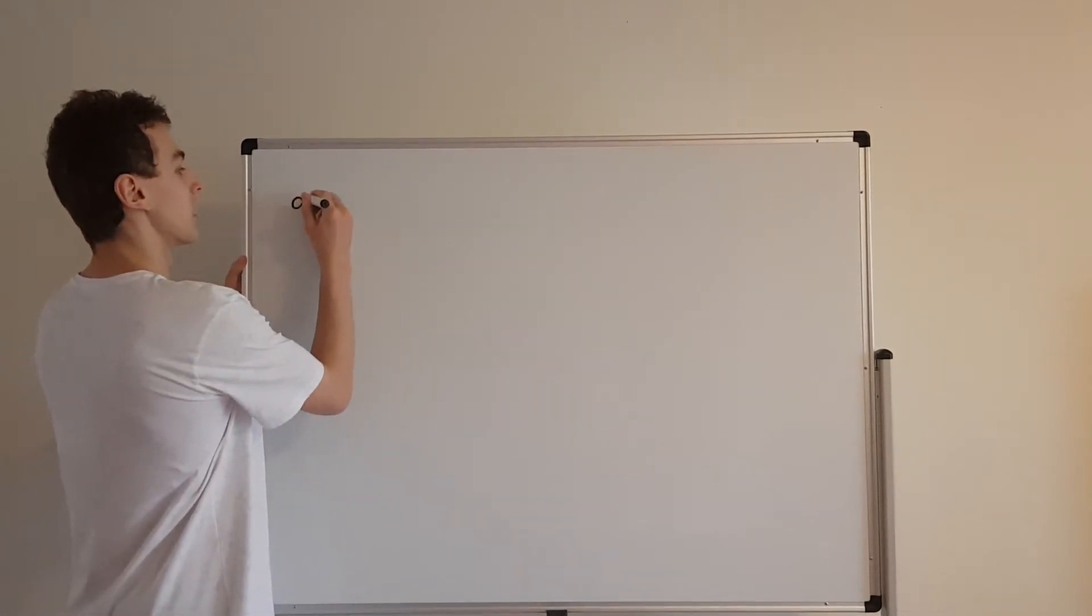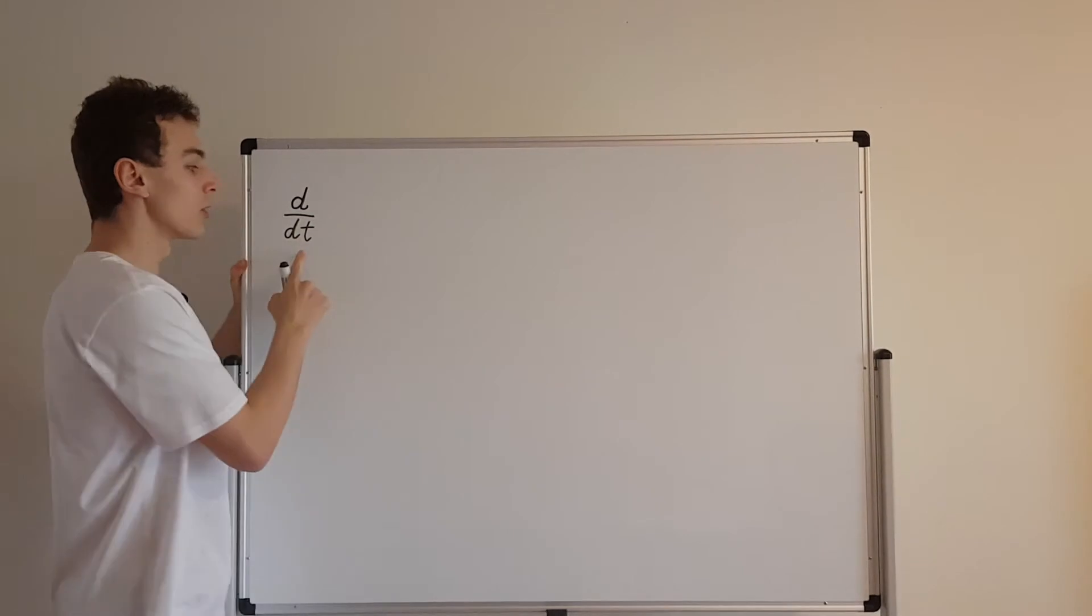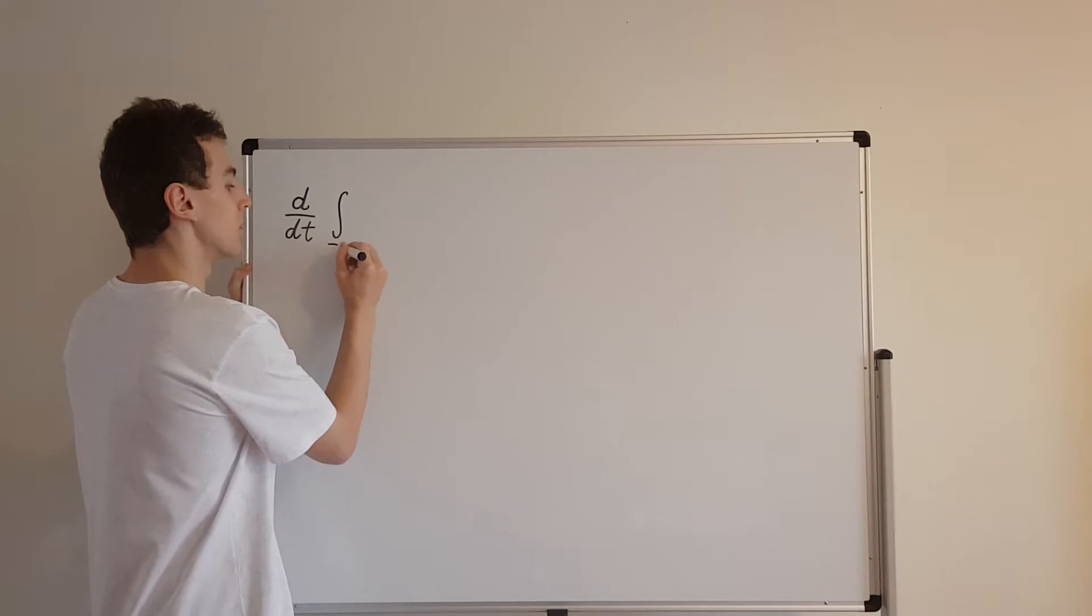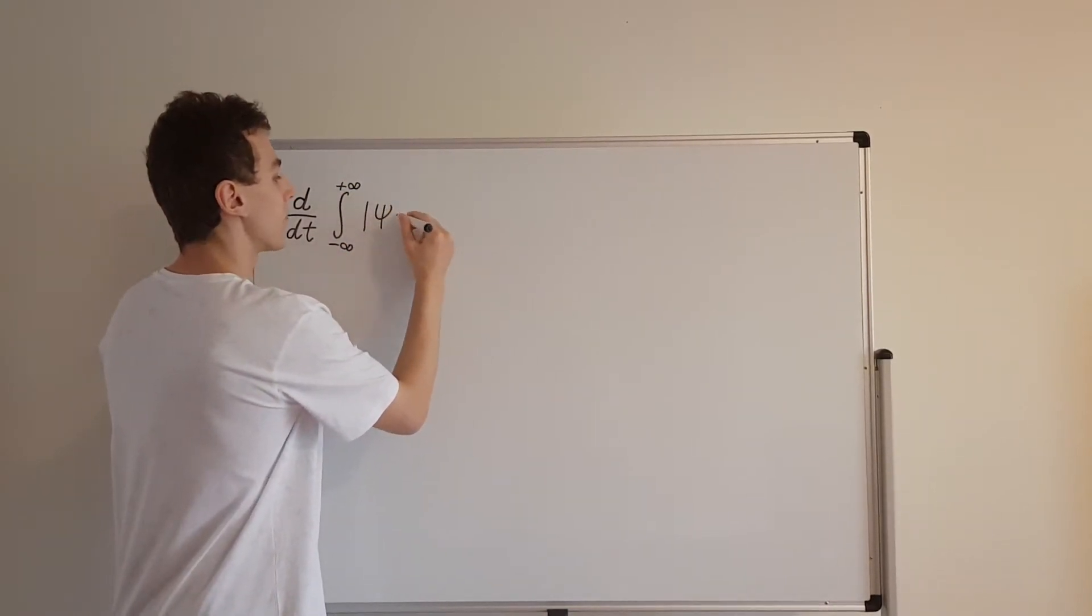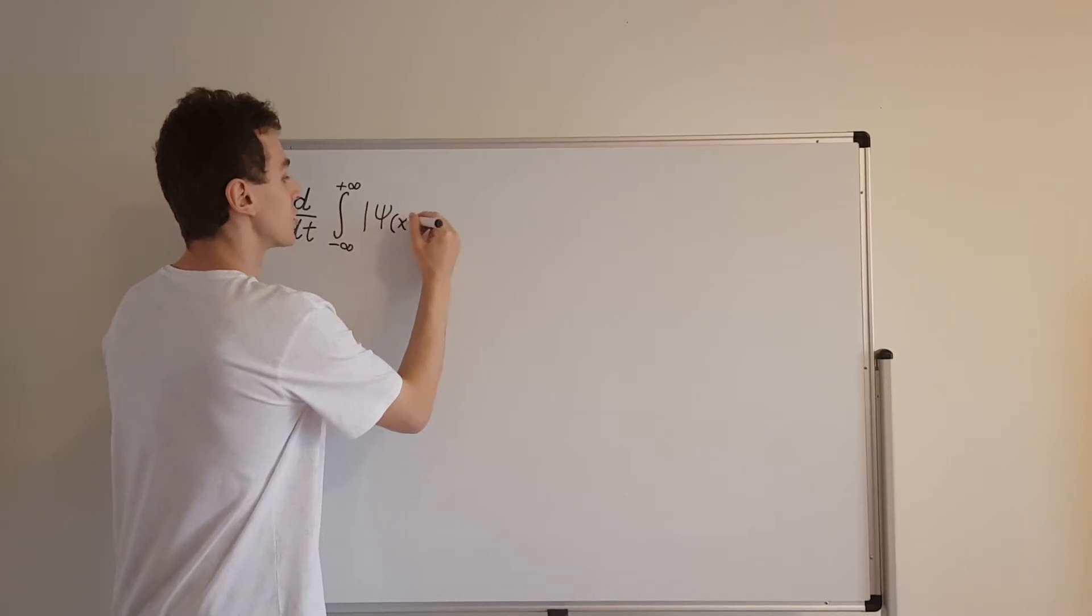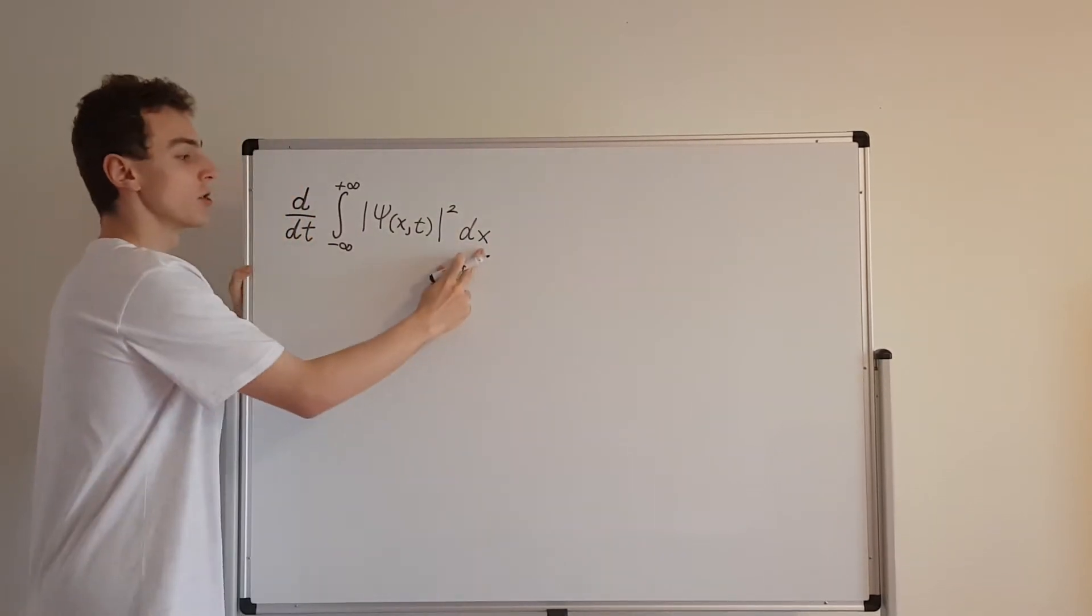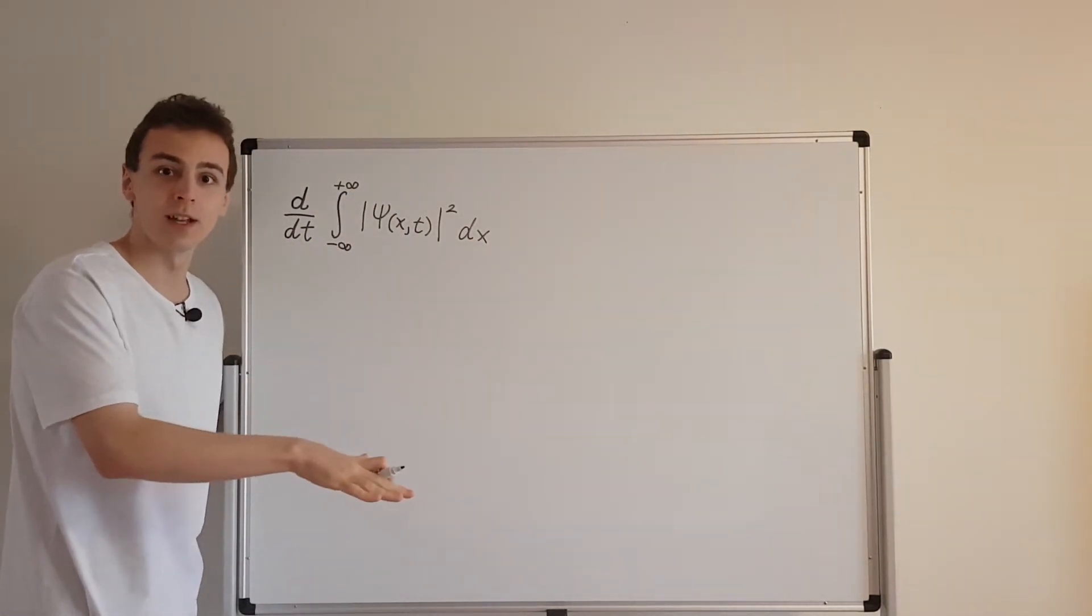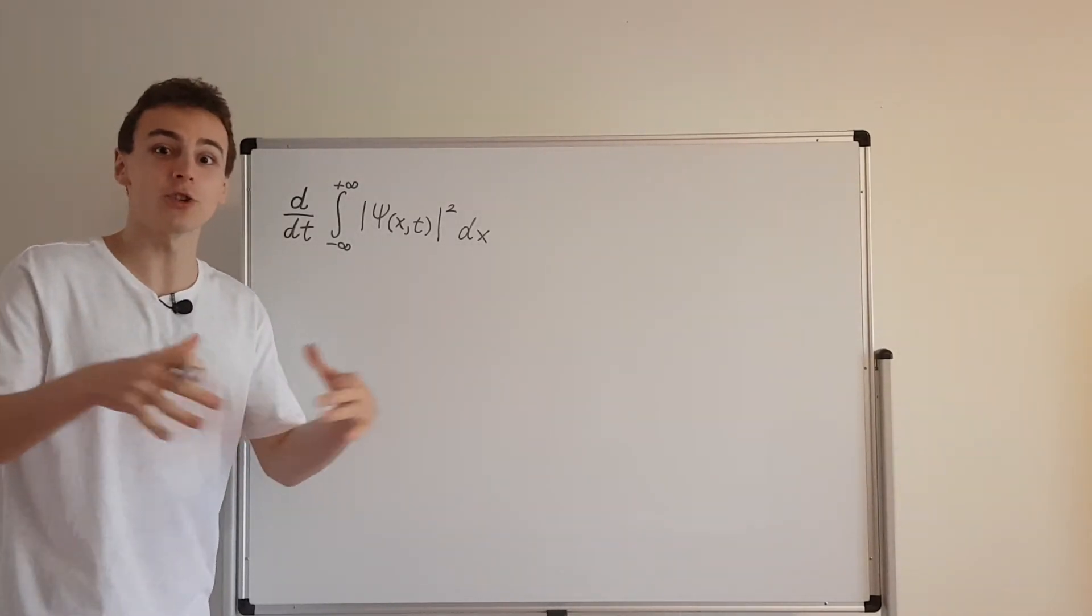So we had a total time derivative, so that's d dt. That's just your normal time derivative. We were taking the normal time derivative of an integral from minus infinity to plus infinity of the wave function's magnitude squared. So that's the probability density function. And this is with respect to dx. So this integral tells us the area underneath the probability density curve. That's the thing we were trying to prove stays the same. So the area underneath the curve is not changing.